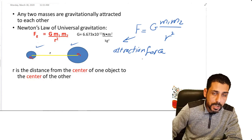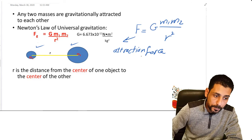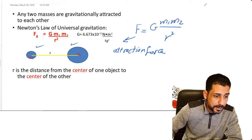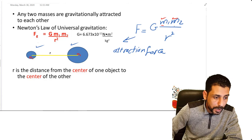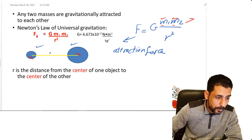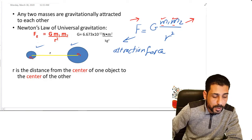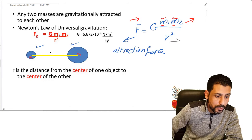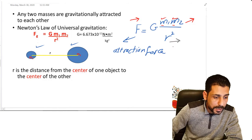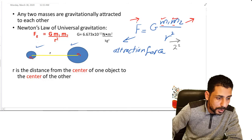This attraction force between any two masses depends first on the masses — it depends on the first mass and the second mass. So F is directly proportional to the masses; when the mass increases, the force increases as well. Also, it is inversely proportional to the distance squared, so when the distance increases between the two masses — say for example if the distance is doubled — the force decreases.